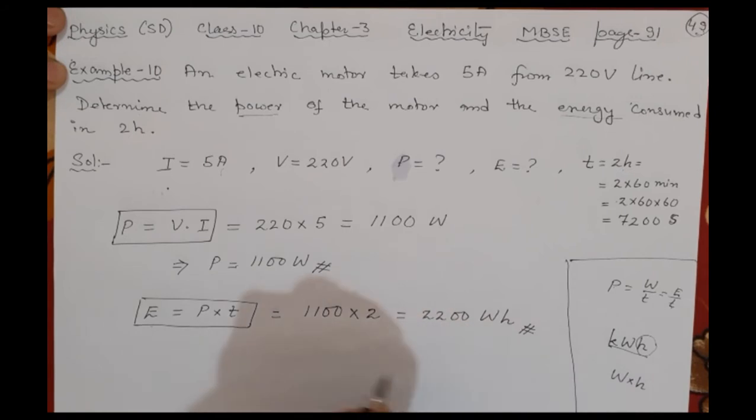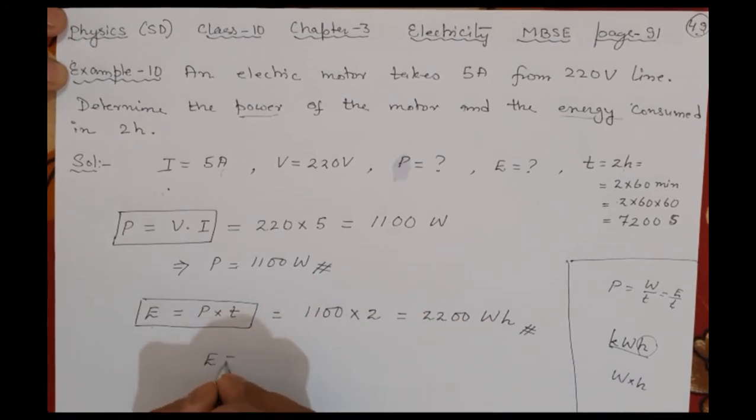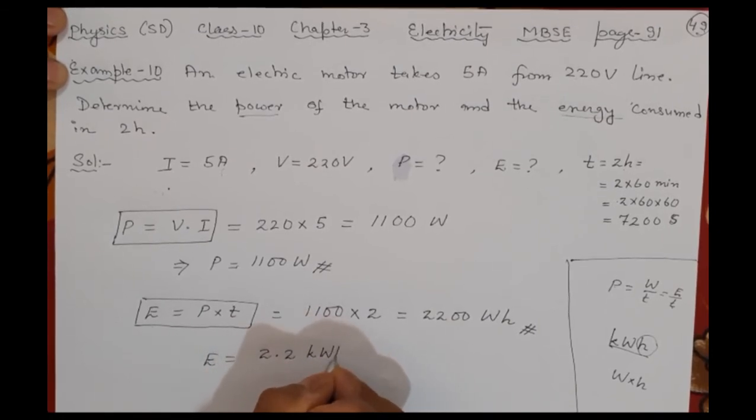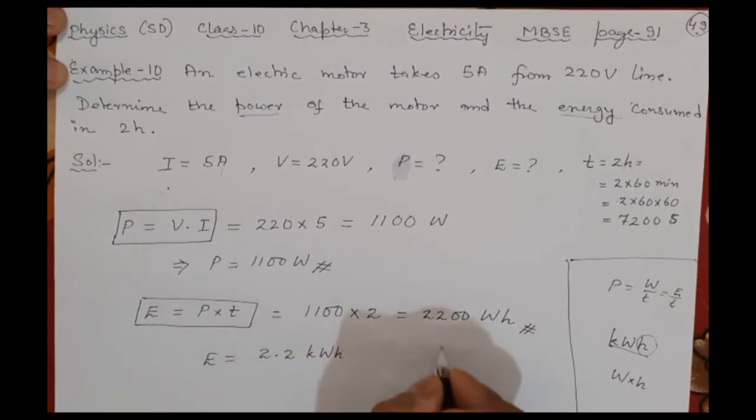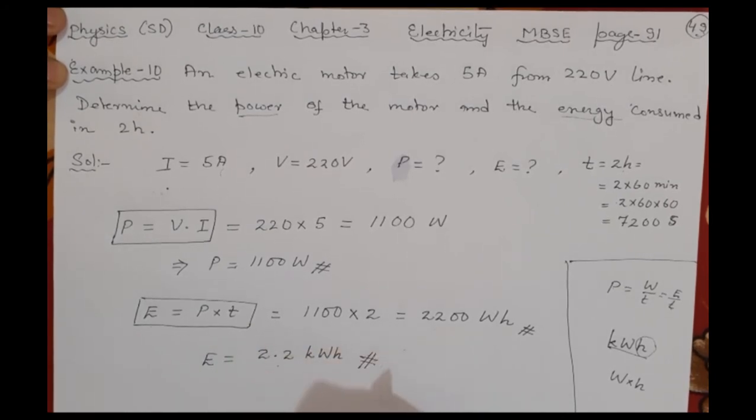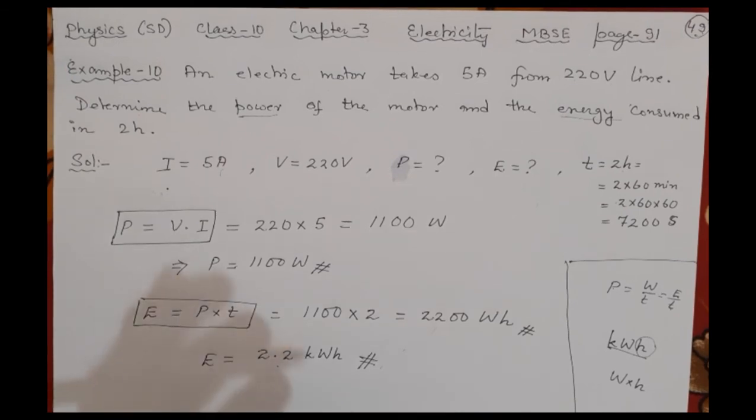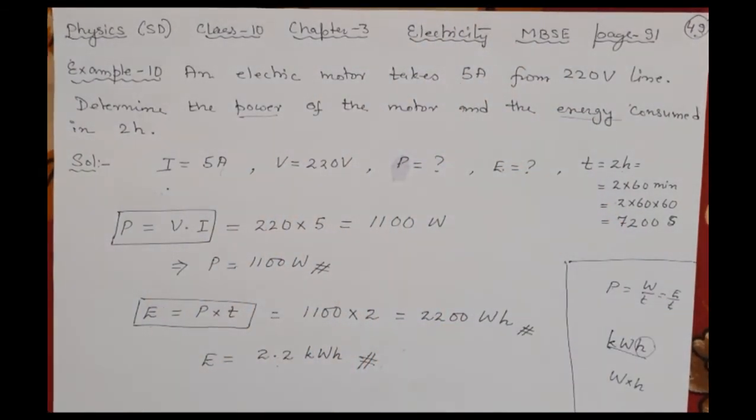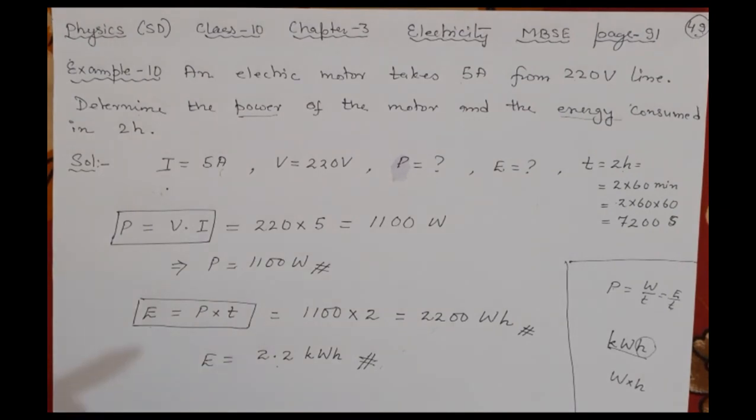2.2 kWh. Remember k is small letter. That means I have divided this by 1000, so zero one two three shifted here: 2.2 kilowatt-hour. So this is how much the energy consumed by the motor in this 5 ampere current and 220 volt line. It is solved. Thank you.